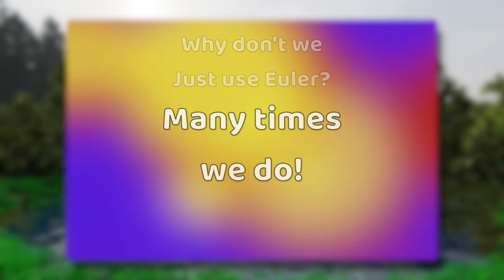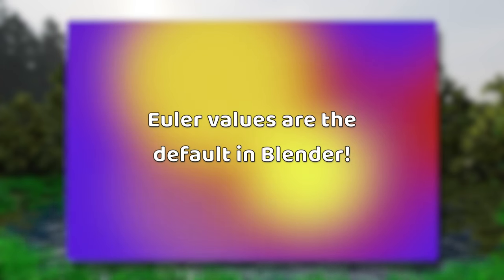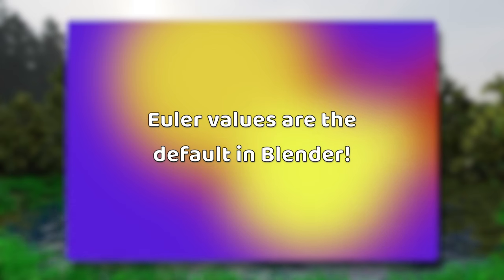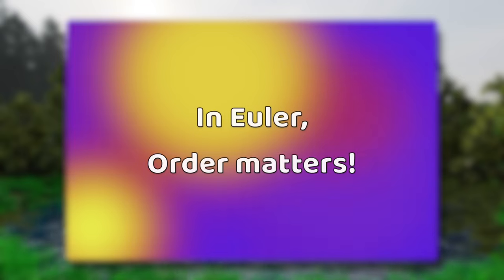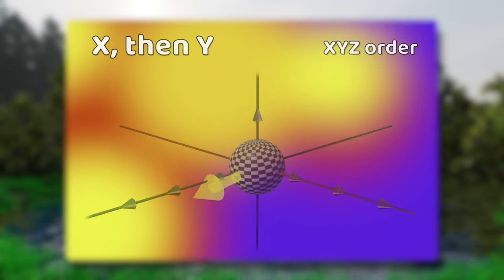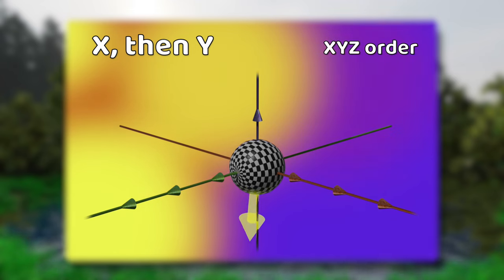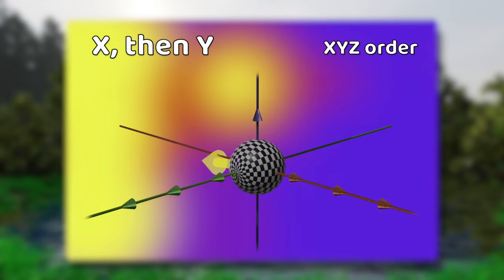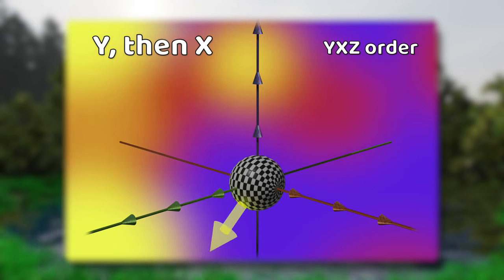Well, many times we do. Euler values are currently the default way rotations are displayed in many popular programs. What makes them less easy to talk about is that Euler values are concerned with the sequence of rotations — in Euler, order matters. We can see this in action: if we increase the X value and then the Y value, we get one result; if instead we increase the Y value and then the X value, we get a different result.